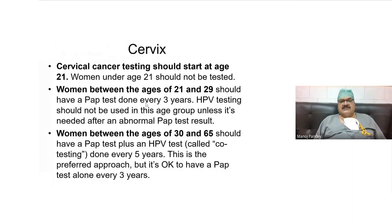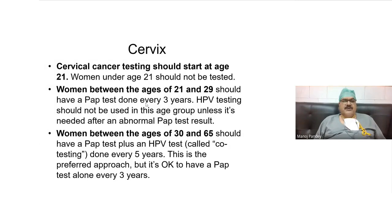Cervix is one of the commonest cancers in this part of the world. Cervical cancer testing should start at the age of 21, and women under 21 should not be tested. Between 21 and 29, it should only be a pap smear, and HPV testing is not recommended up to age 29. For women above 30 years, they should have co-testing — a pap smear plus an HPV test — done every five years, though some recommend every three years.